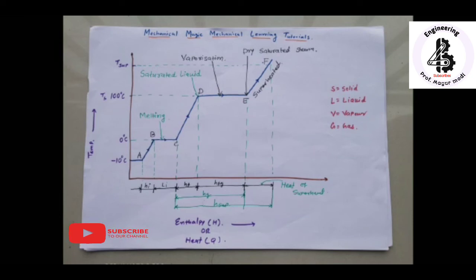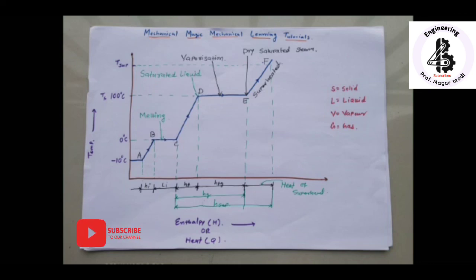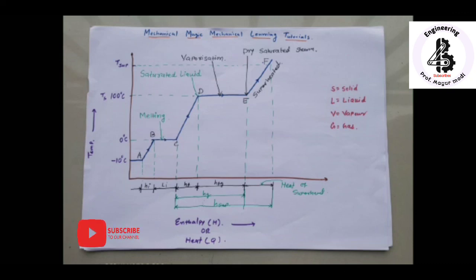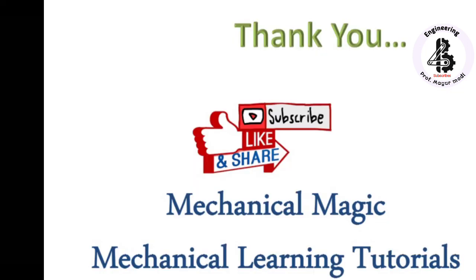To summarize the phase change terminology: solid to liquid is fusion or melting; liquid to solid is fusion or freezing; solid to vapor is sublimation or defrosting; vapor to solid is sublimation or frosting; liquid to vapor is evaporation; and vapor to liquid is condensation.